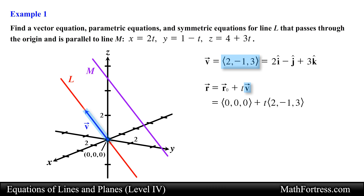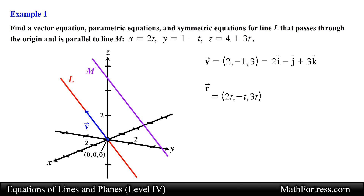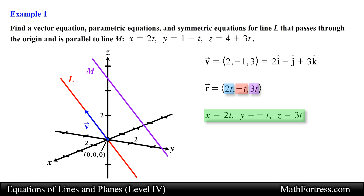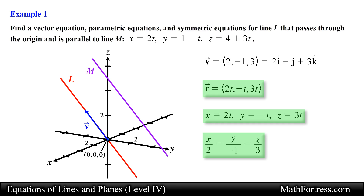Substituting this parallel vector into the vector equation of line L, we obtain the following. We distribute the parameter t and add the vectors to obtain the vector equation. Next we find the parametric equations by isolating all three components. Lastly, we find the symmetric equations by solving for the parameter t in each parametric equation and equating them, obtaining the following symmetric equations. This is our final answer.